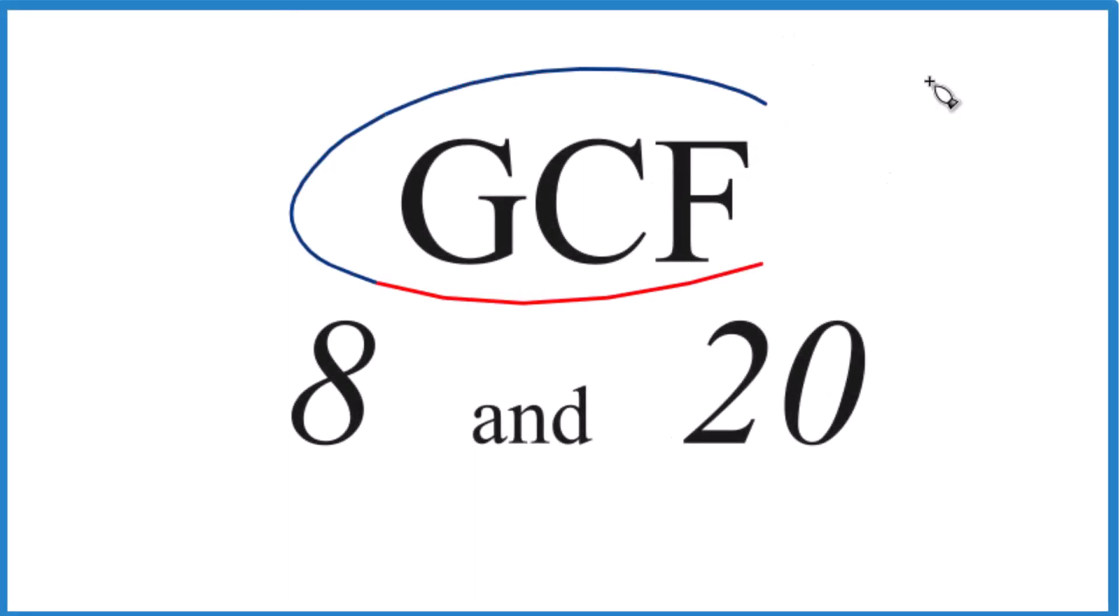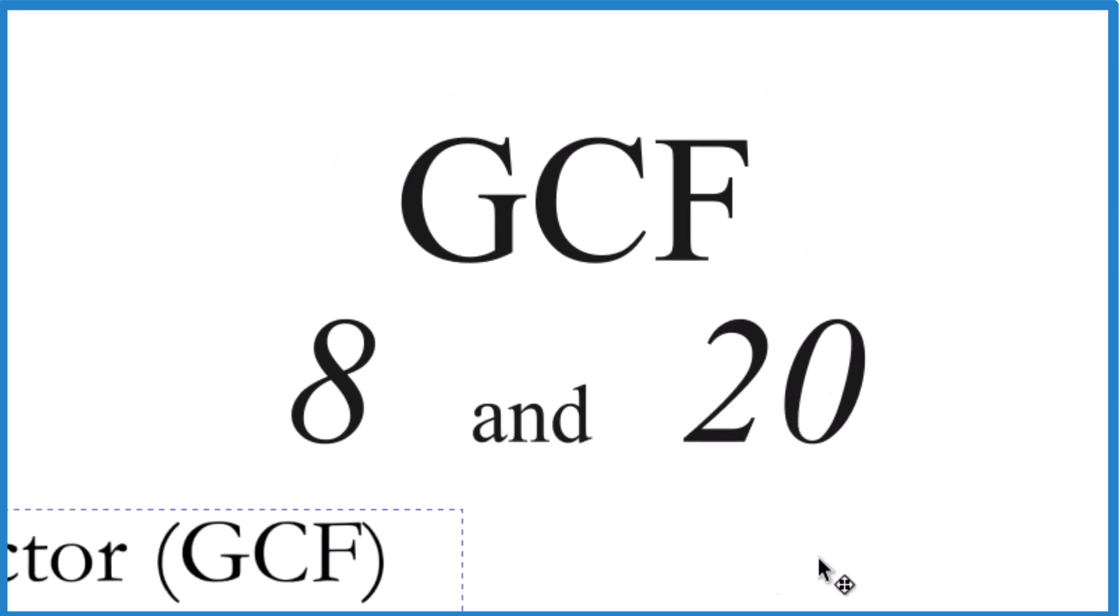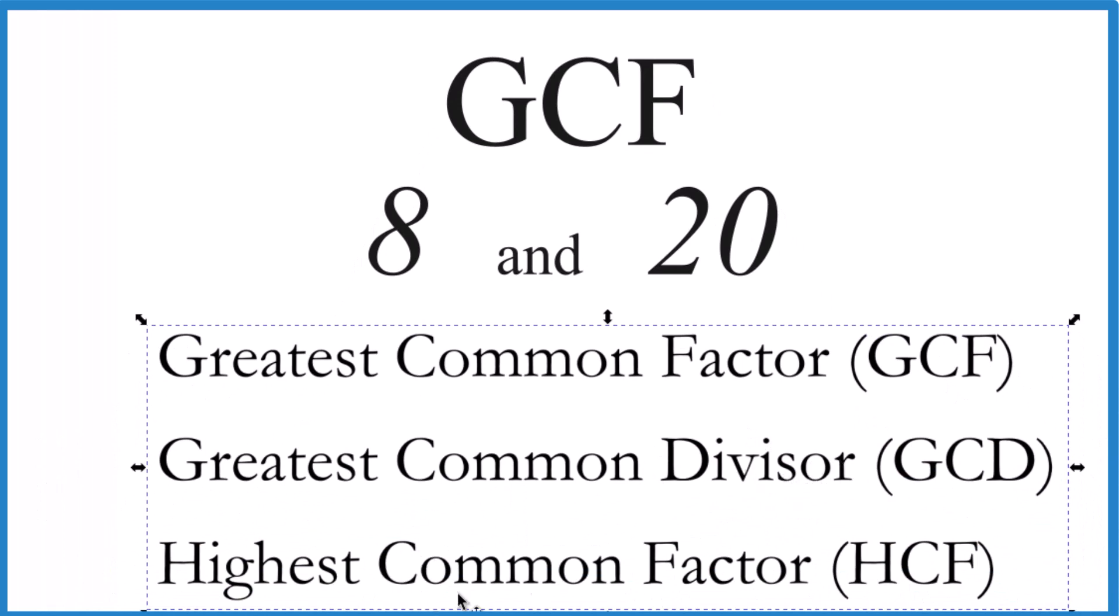Okay, let's find the greatest common factor, the GCF, for 8 and 20. Here's how we do it. So the GCF, that's also called the greatest common divisor and the highest common factor. These are the same thing. I like GCF, let's go with that.